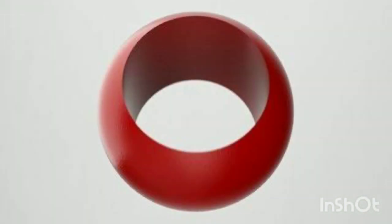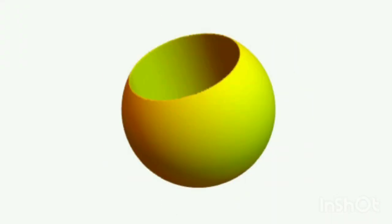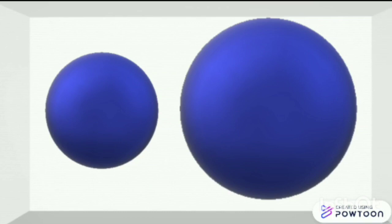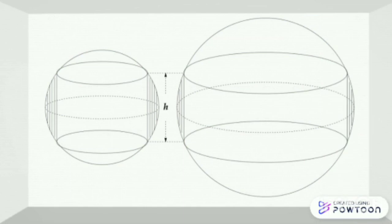If you take a sphere and remove a cylinder from it, you'll be left with a shape called a napkin ring. It's a bizarre shape because if two napkin rings have the same height, they'll have the same volume, regardless of the size of the spheres they came from.